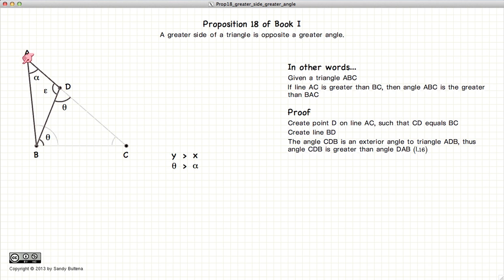If we're looking at the triangle ABD, by Proposition 16, the angle theta is going to be larger than the angle alpha.